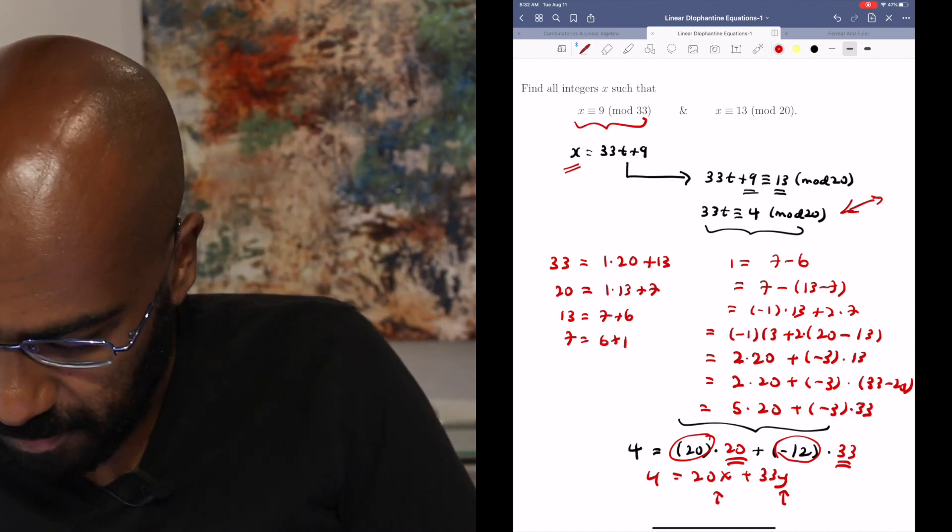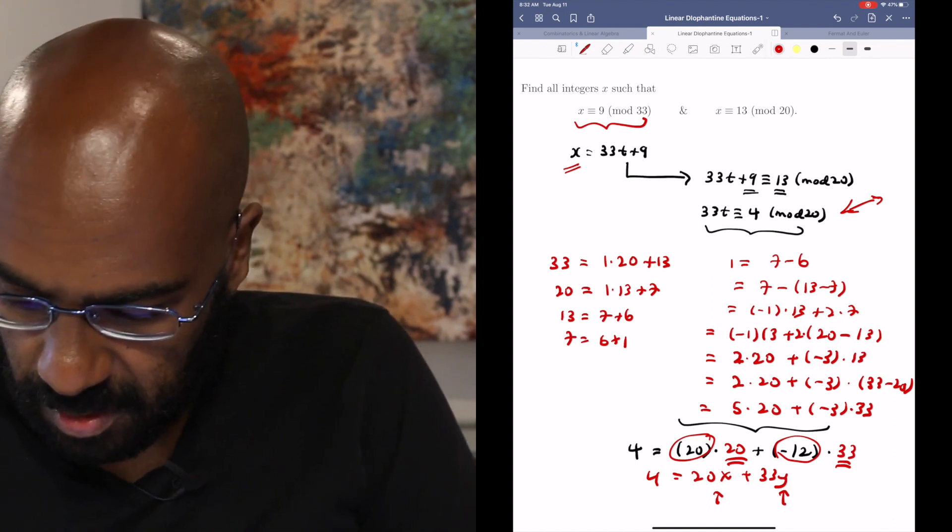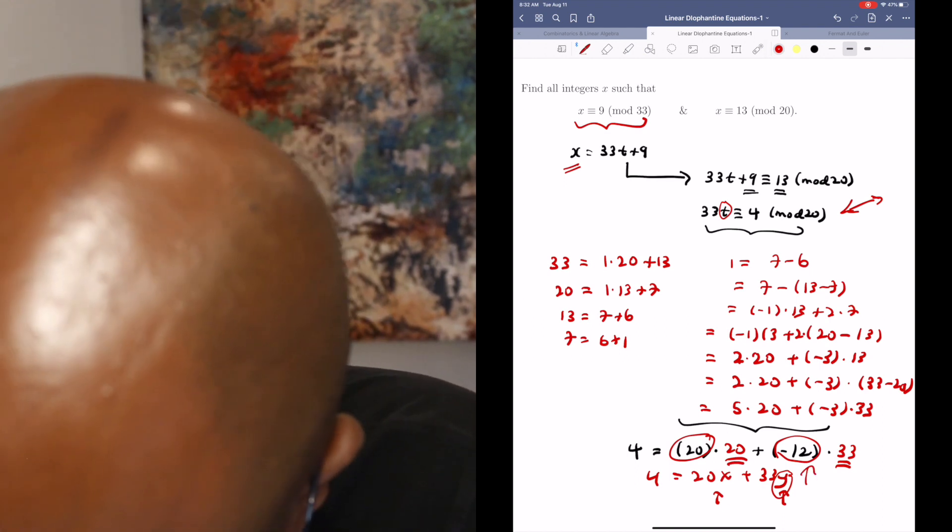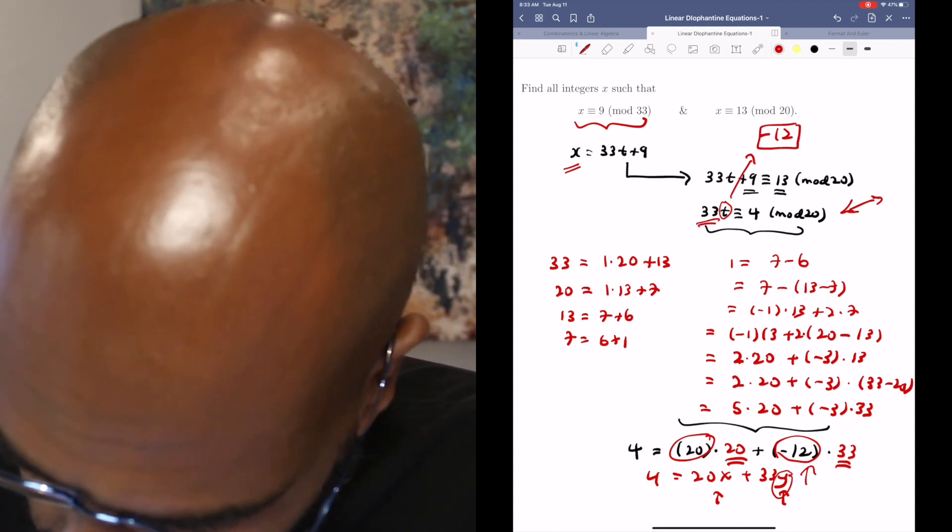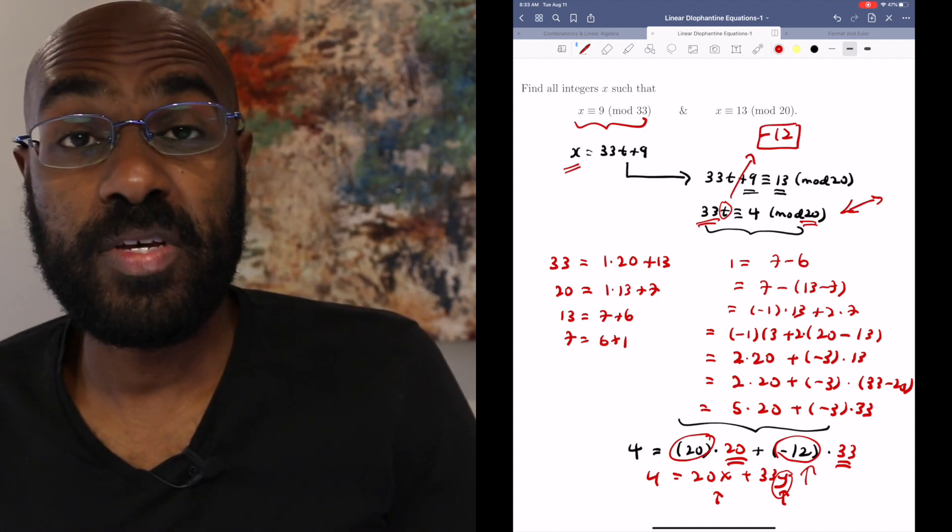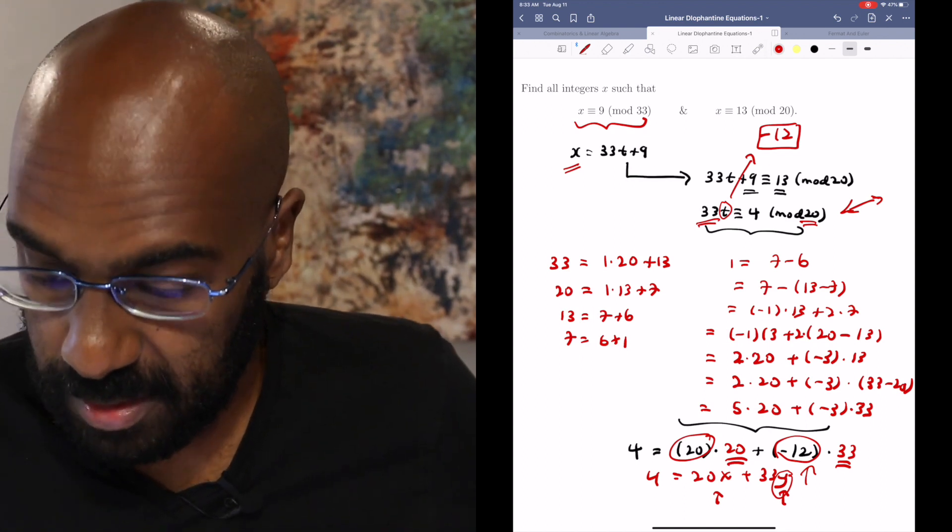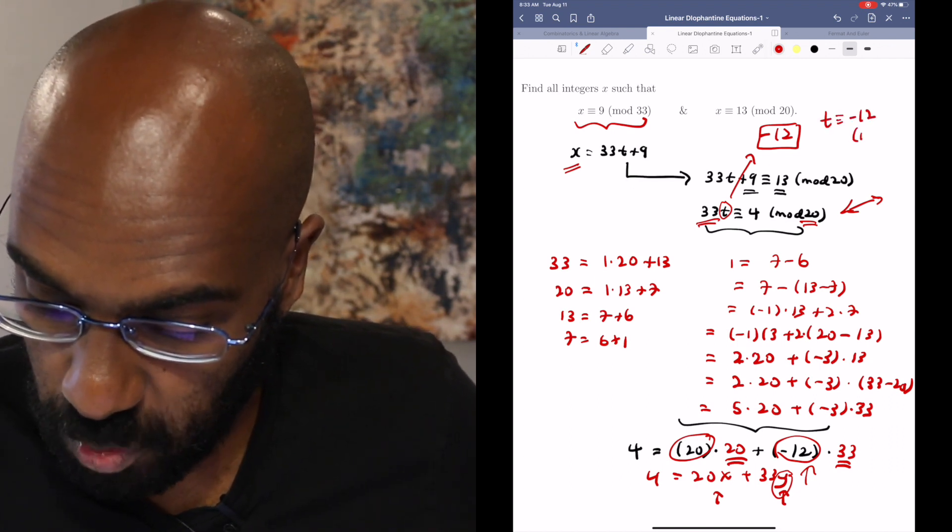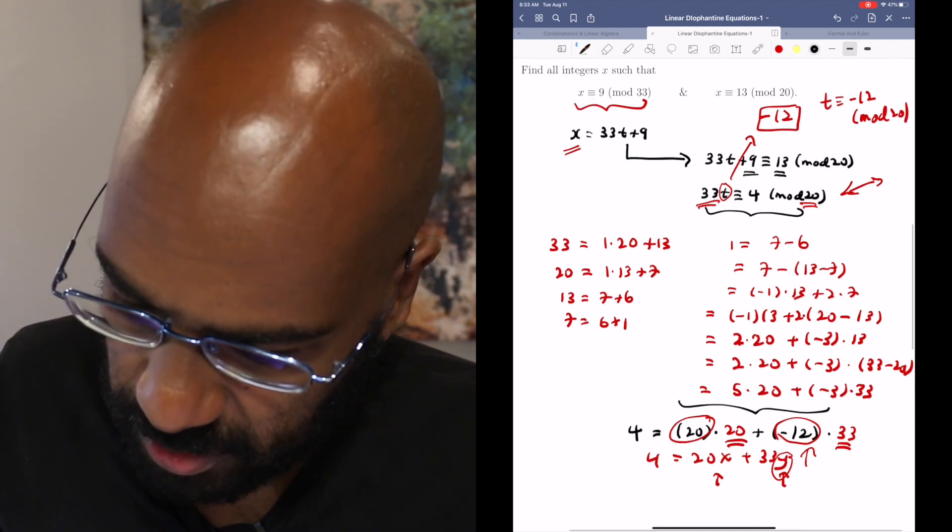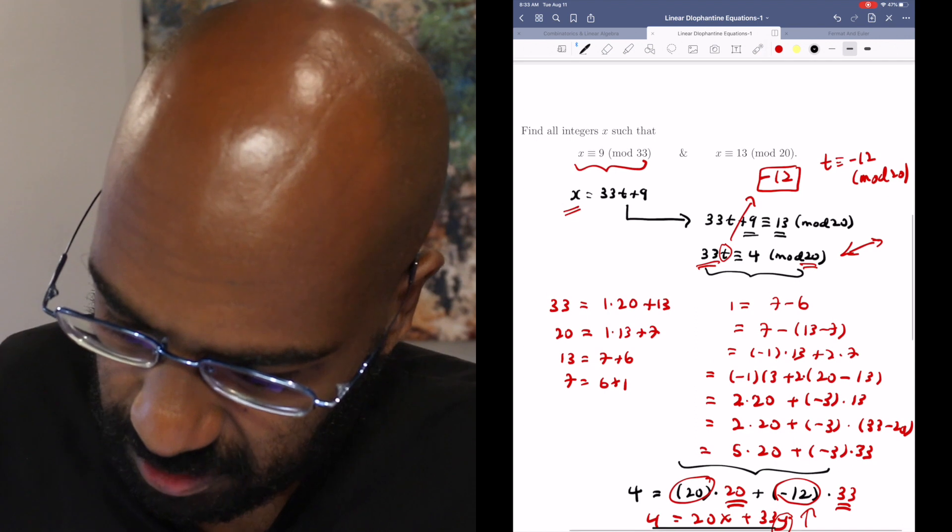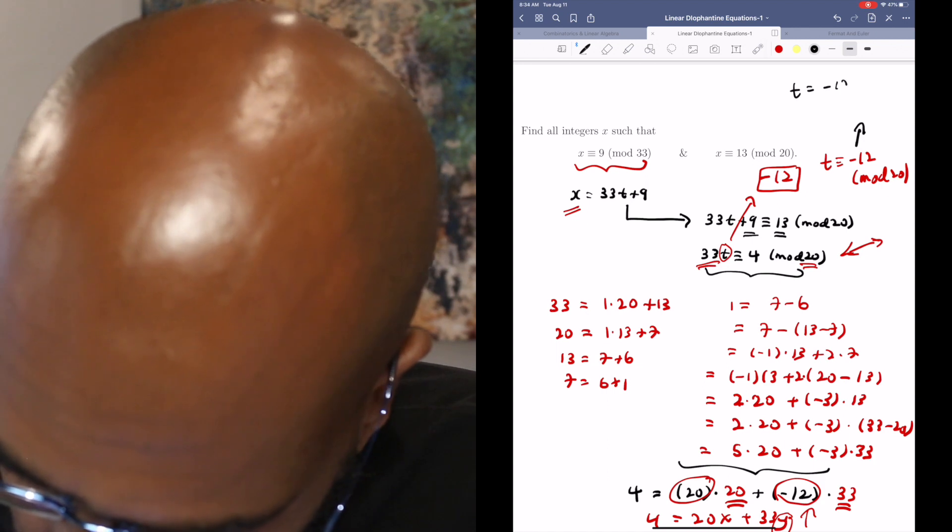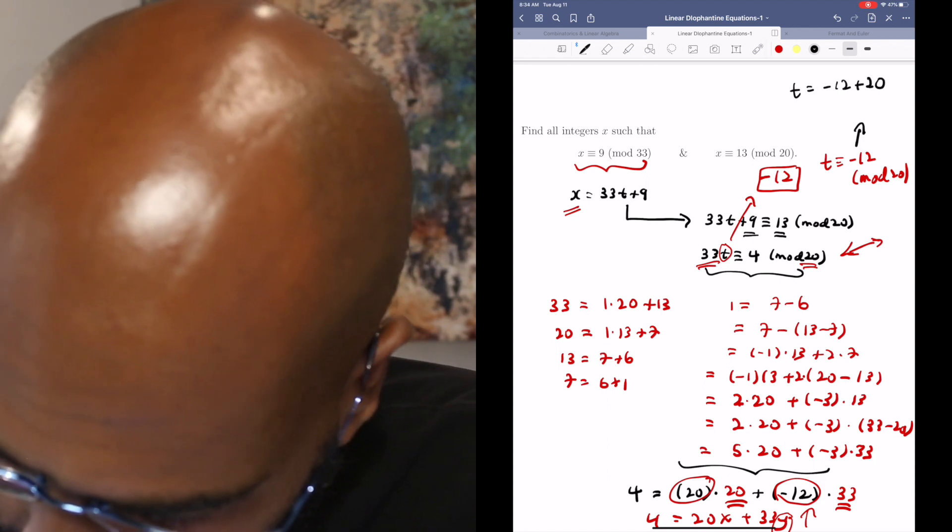So in our congruence then, the value of t that will work is whatever value of y works here, which is negative 12. So negative 12 works. And because the GCD of 33 and 20 is 1, by our previous theorem, the linear congruence theorem, it tells us that the entire solution set for t is things that are negative 12 modulo 20. So what does that tell us about our actual solution for x?